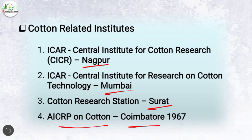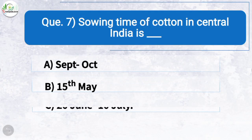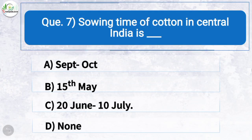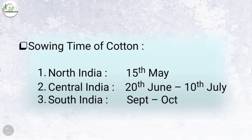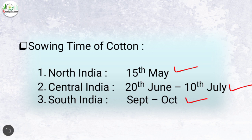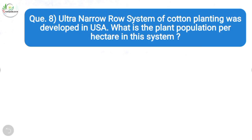Question seven: Sowing time of cotton in central India is — the correct answer is option C: 20 June to 10 July. In north India the sowing time is about 15th May, in central India it is from 20th June to 10th July, and in southern India it is from September to October.